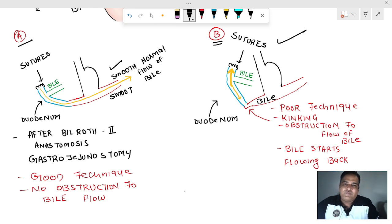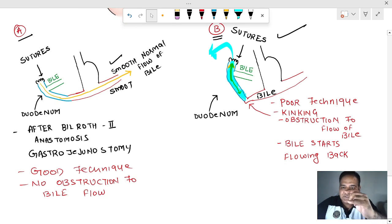All of these can block the flow of bile. So bile will not flow. If the bile does not flow, bile will keep on accumulating in the duodenum and one day it will rupture. The sutures which you applied will rupture and the bile will start flowing out. That is duodenum stump blowout syndrome.